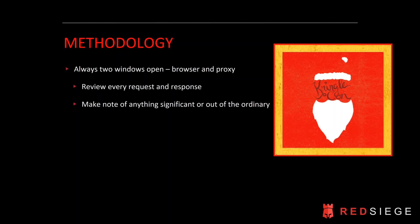I'm looking for anything significant or out of the ordinary in the application's responses. You often find functionality that's been commented out — sometimes old functionality that's no longer part of the application and may not have the same security controls. It's commented out, but if you access it directly the server will serve up that content. The same goes for pre-production content staged on a server. You won't see it in the browser, but if you look at responses, source code, and JavaScript files coming back, you will find links to these kinds of resources.